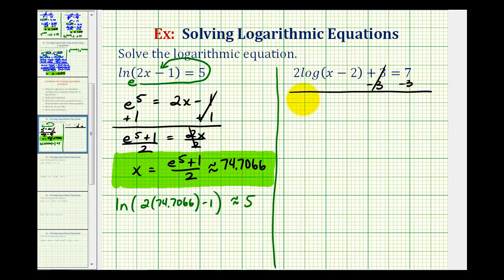This would be zero, so we have two times the common log of x minus two equals four. Then undo this multiplication and divide both sides by two. This simplifies to the common log of x minus two equals two.